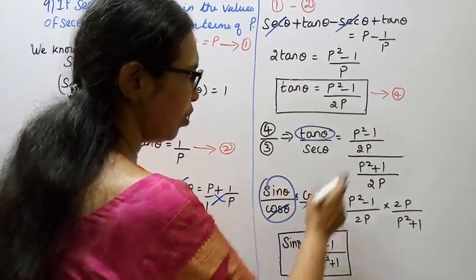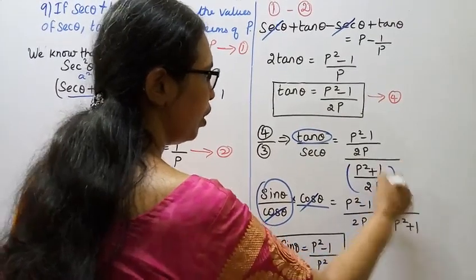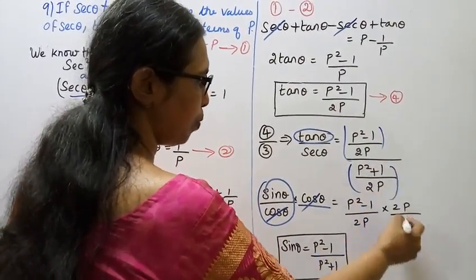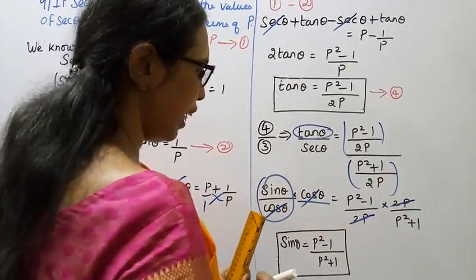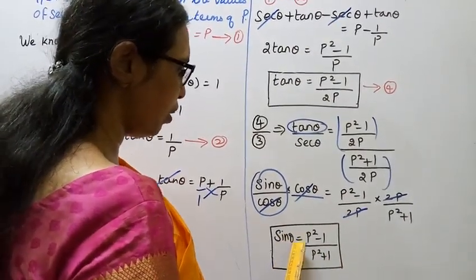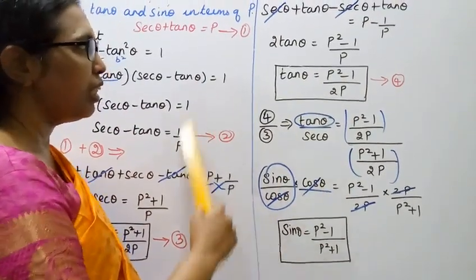So sin θ equals p² minus 1 by 2p times the reciprocal of the denominator, which is 2p by p² plus 1. The 2p terms cancel, giving sin θ equals p² minus 1 by p² plus 1.